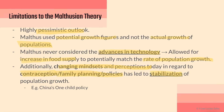Changing mindsets and perceptions today are also regarded in terms of contraception, family planning, and policies that have led to the stabilization of population growth. Many countries have introduced education as a strategy to ensure people are aware of family planning — how many children to have and when to stop. Policies have also been introduced, for example China's one-child policy, which significantly reduced the rate of population growth by ensuring each family only has one child. These are areas Thomas Malthus failed to acknowledge and neglected in his theory.